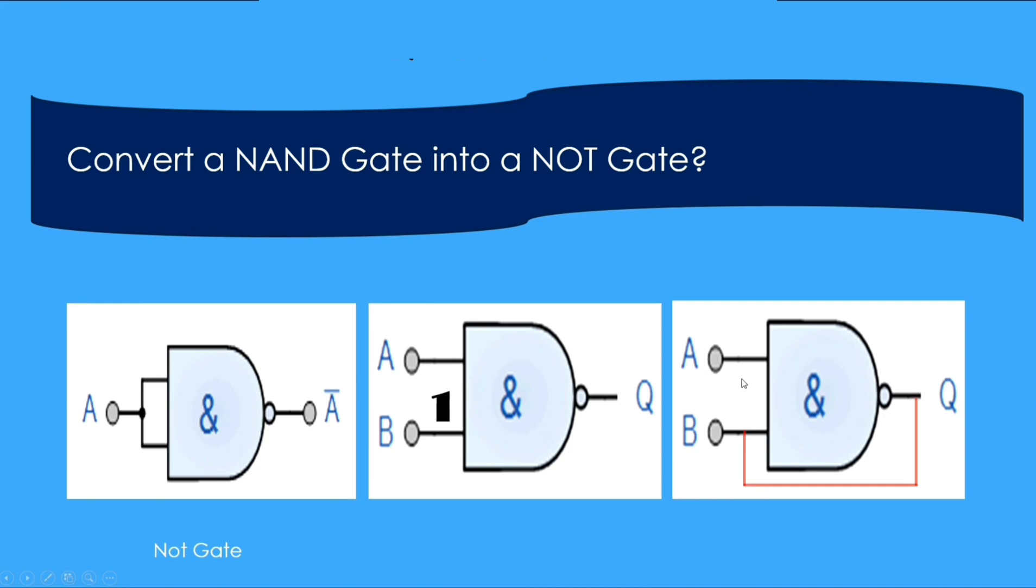When you apply one at input A, you will get zero, and this zero will pass to input B and make it one. This one will come here and make it zero, and there will be zero, one, zero, one at the output.